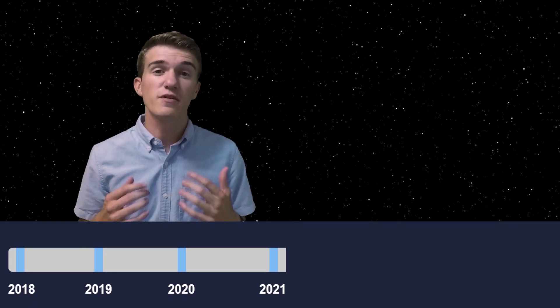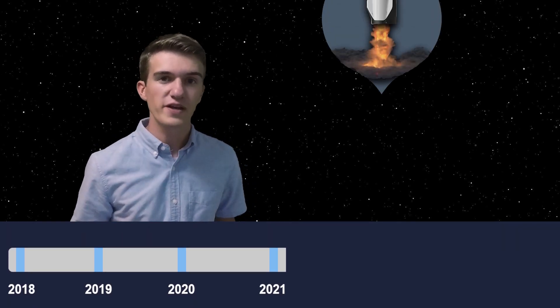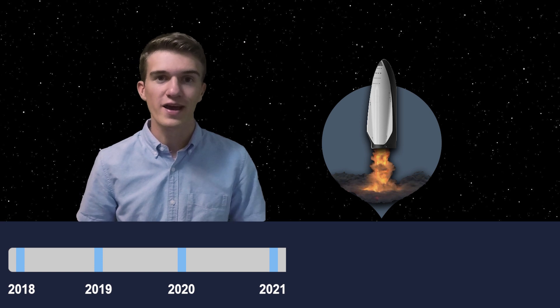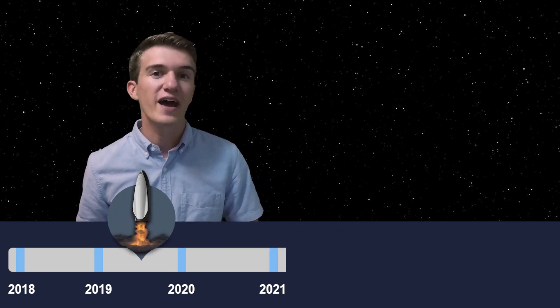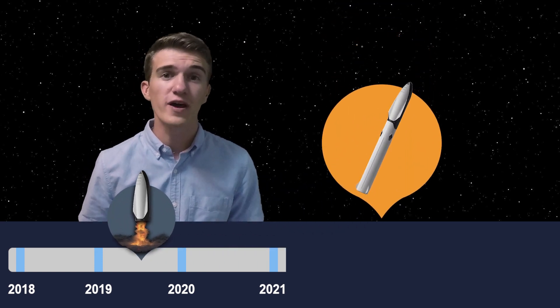Now SpaceX claims that they'll be conducting some of the first tests on the big falcon spaceship, or the upper part of the rocket, next year in 2019, and they might even have a suborbital or even orbital flight by 2020.